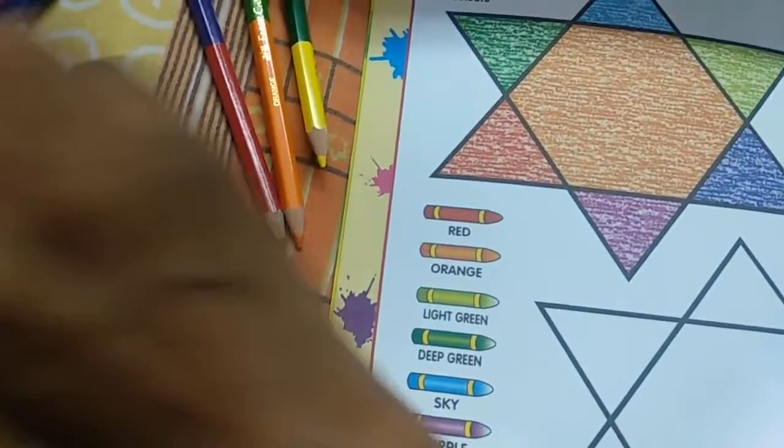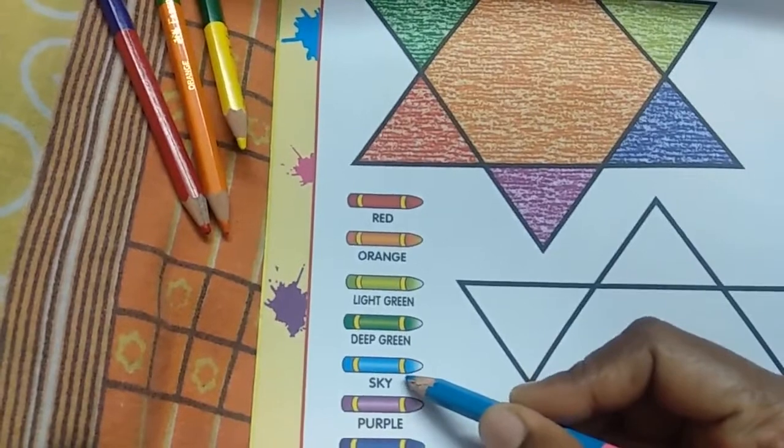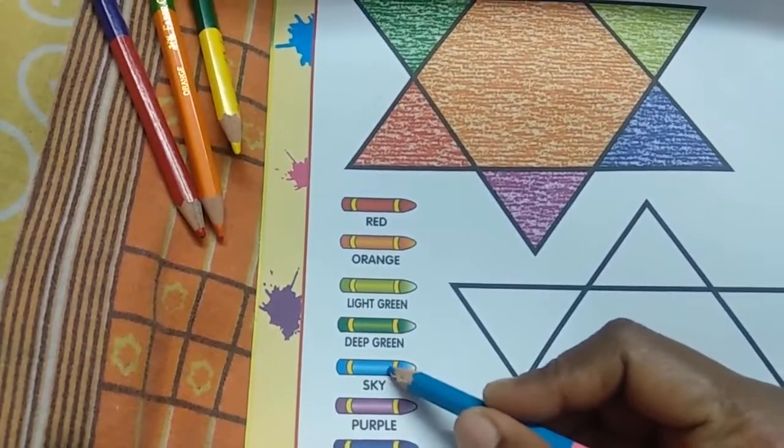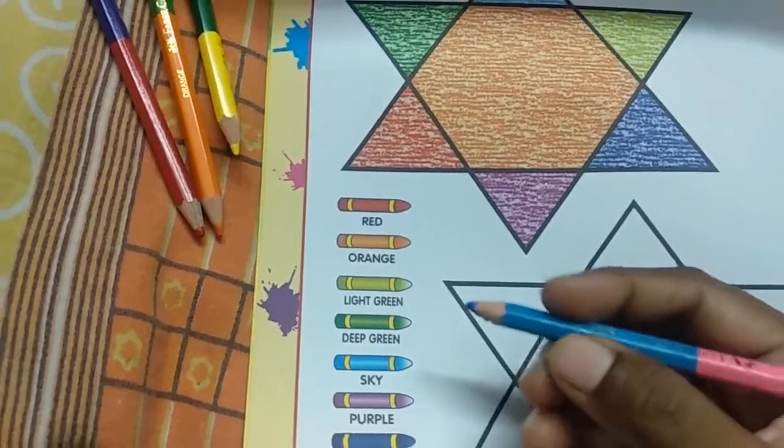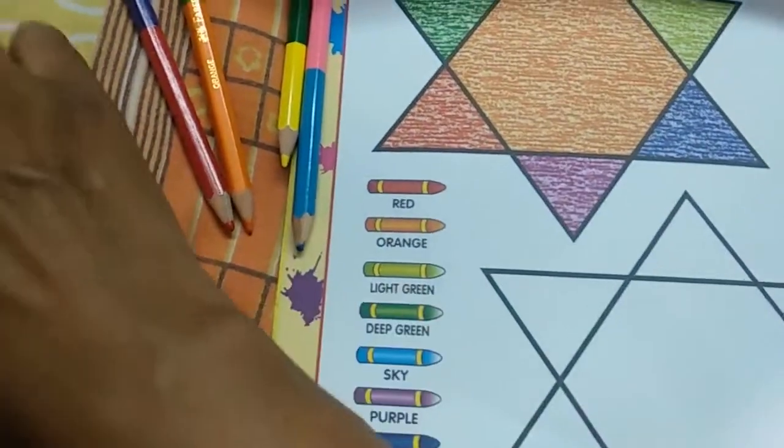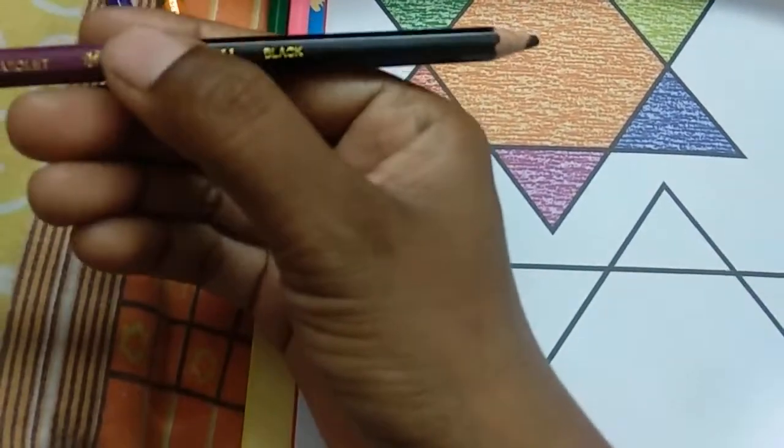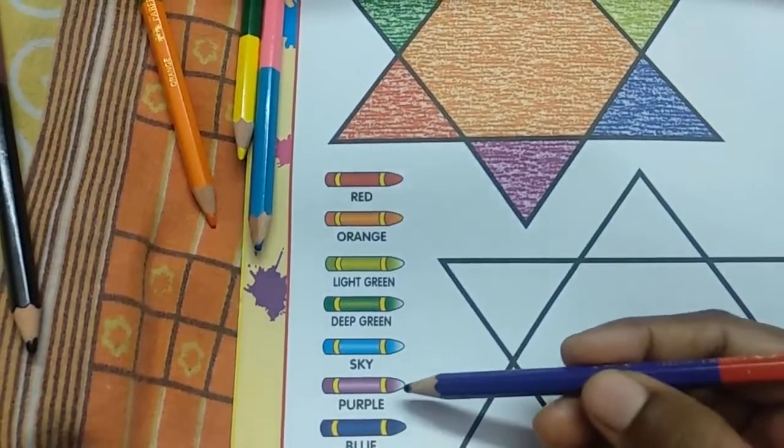And the next color is sky. This color resembles the colors of the sky. That's why it's called sky or it is also called light blue or sky blue color. Then our next color is purple.